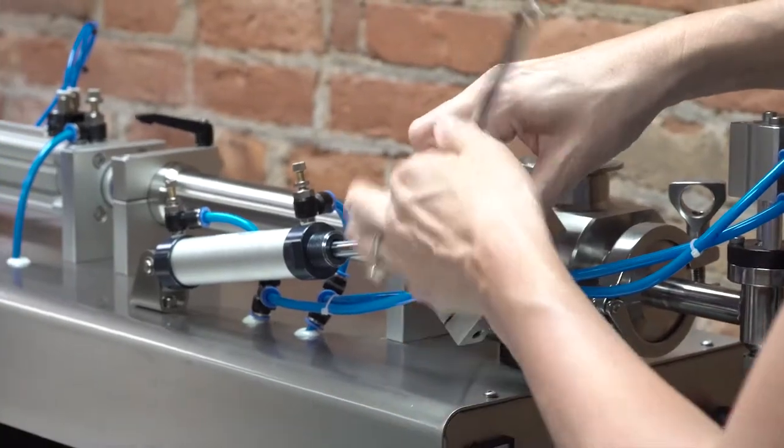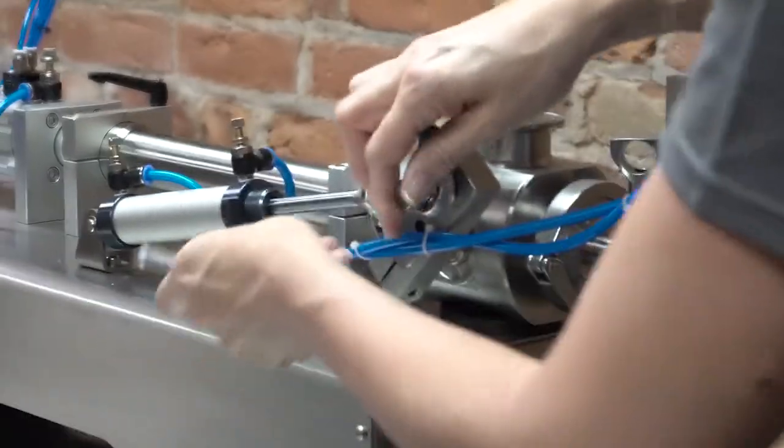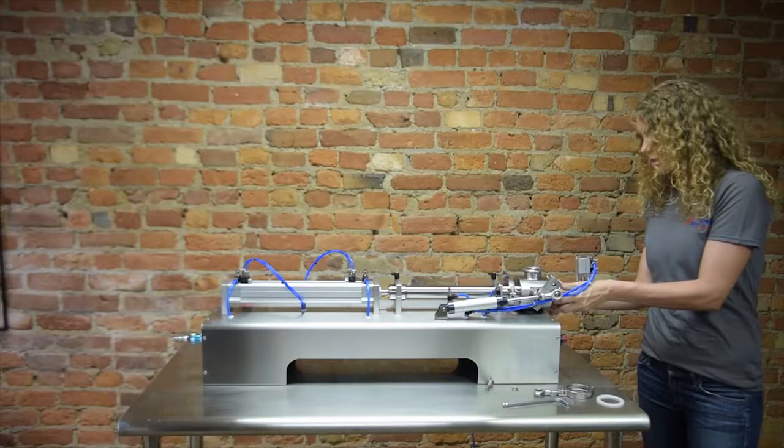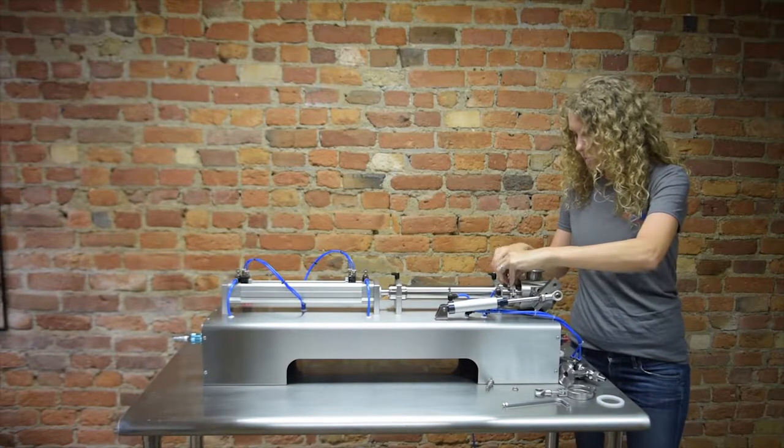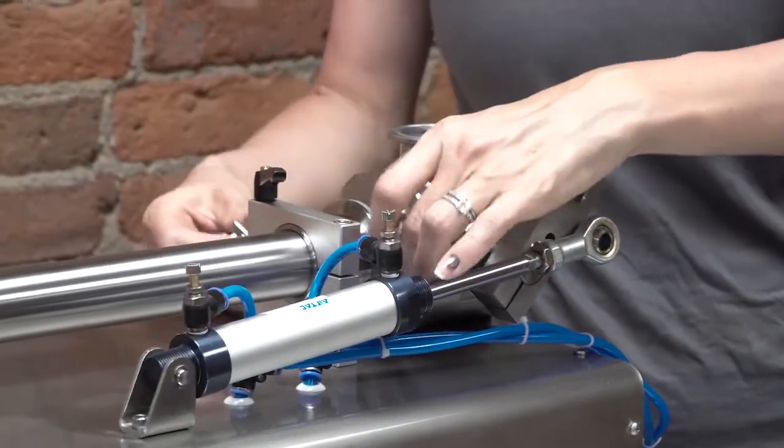Loosen and remove the linkage bolt with an 8mm hex key. Remove the sanitary clamp to remove the fill nozzle. Remove the clamp between the 3-way directional valve.